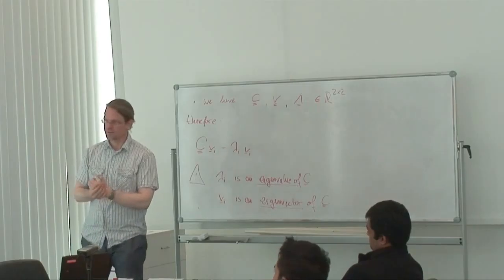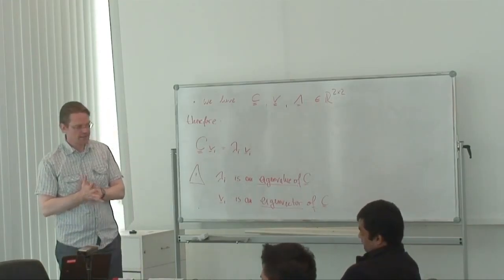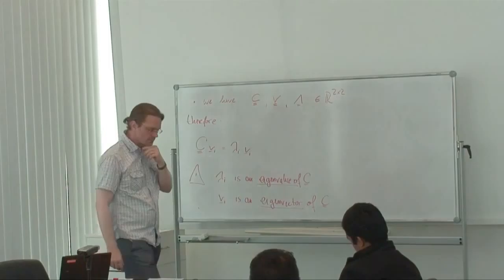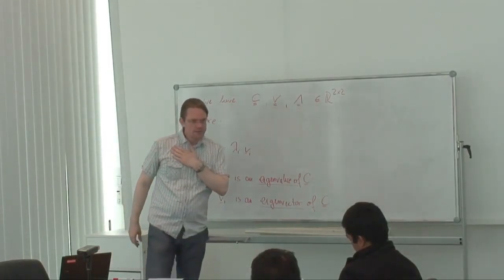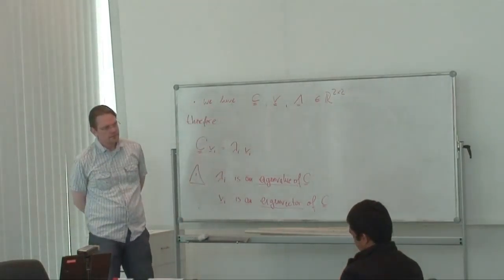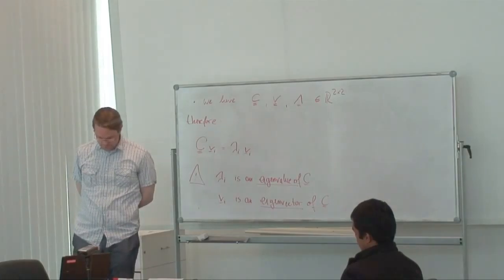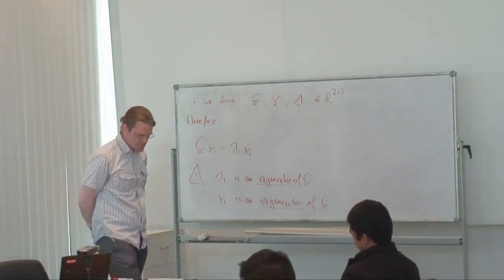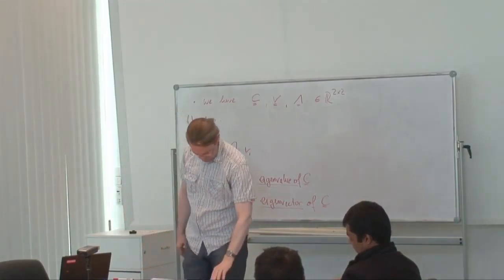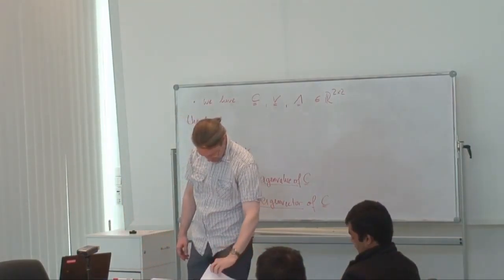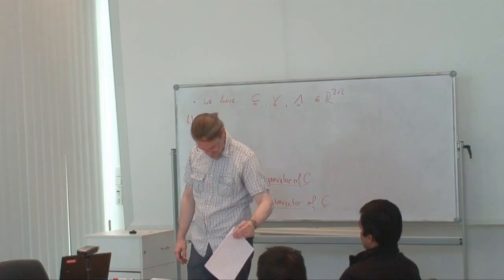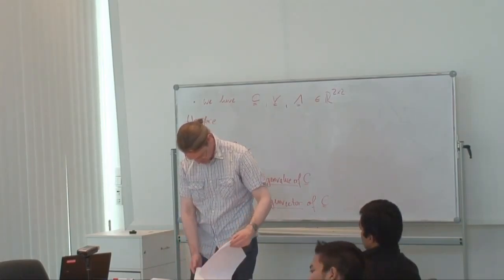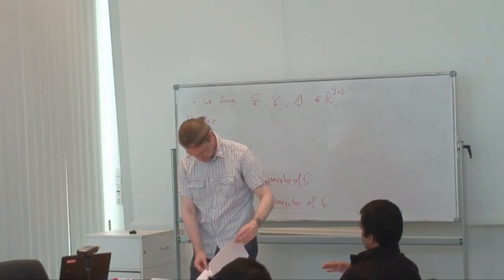That's all for today. Are there any questions? A student asks: when minimizing the moment of inertia equation and taking the derivative with respect to theta, what was the motivation — since for rho the result of finding the mean was clear?